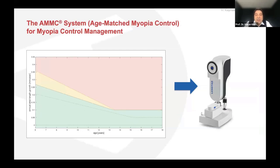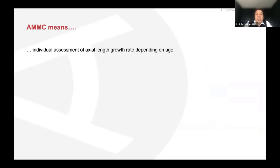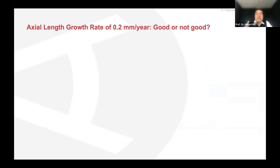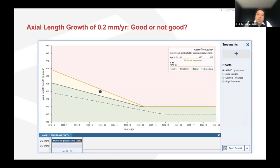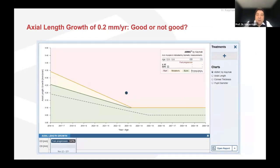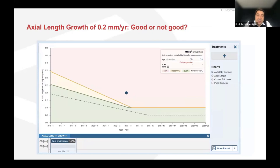We implemented this in the LANSTAR together with Haag-Streit. AMMC means individual assessment of axial length growth rate depending on age, supporting the question of when to start. Now you can answer: is 0.2 mm per year good or not? It depends on age. At seven years, it's good. At ten years, you are in the yellow zone — moderate axial length growth rate. At twelve or thirteen, it is not good; this is a fast progressor requiring therapy. It always depends on age.